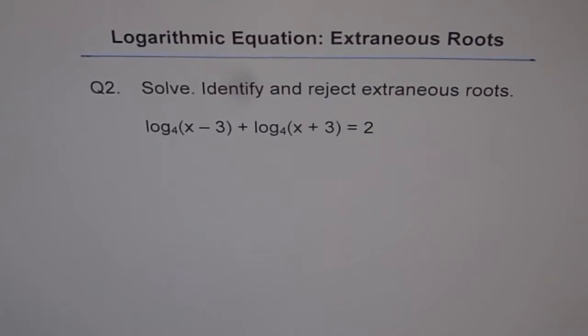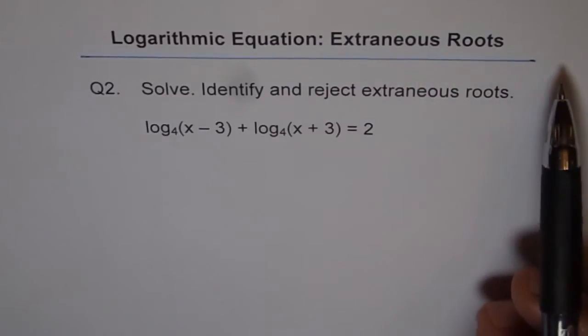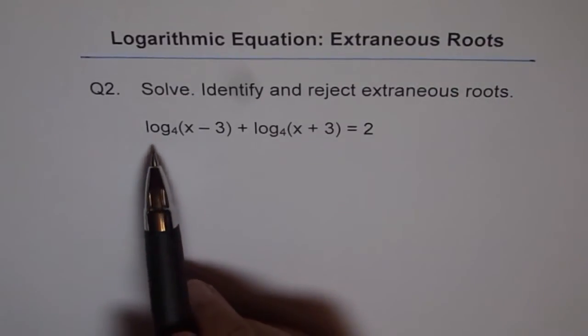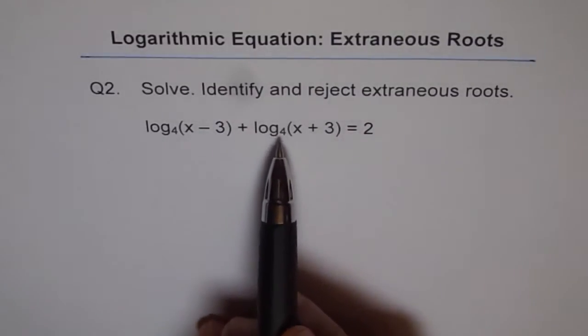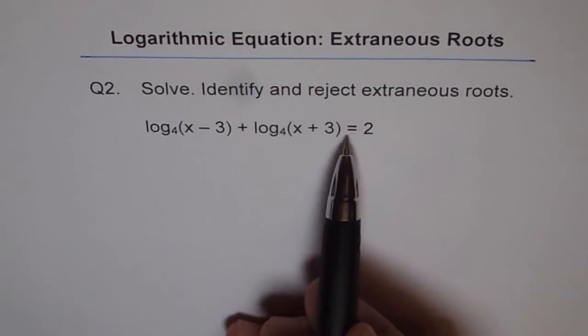Question number 2 on solving logarithmic equations and checking for extraneous roots. The function given to us is log₄(x - 3) + log₄(x + 3) = 2.